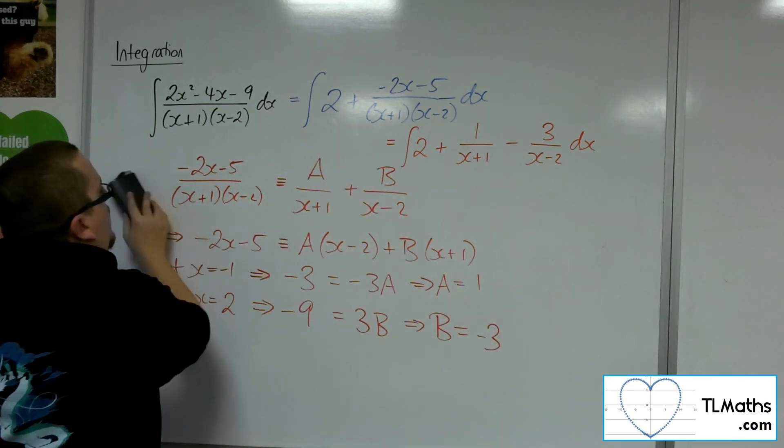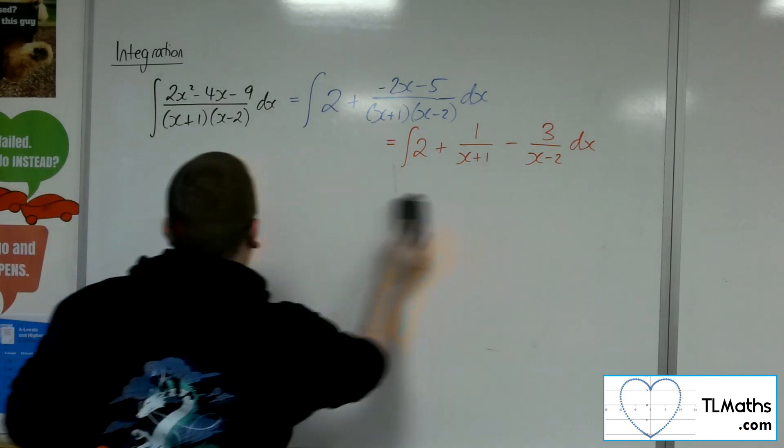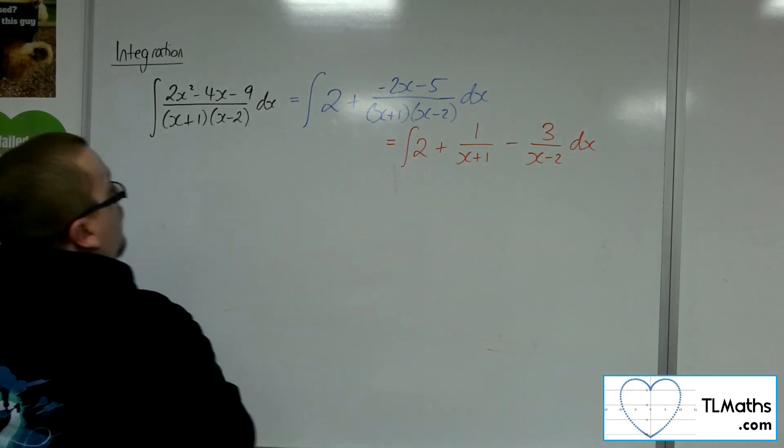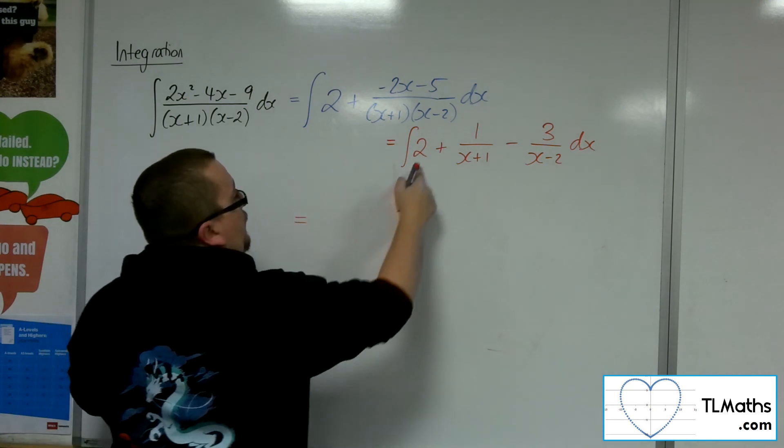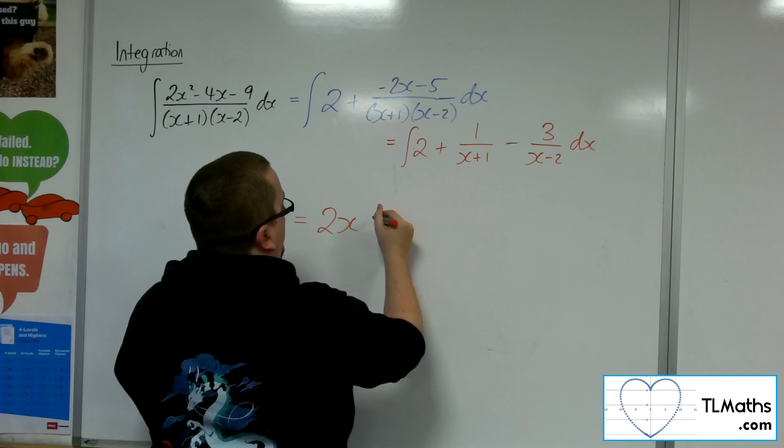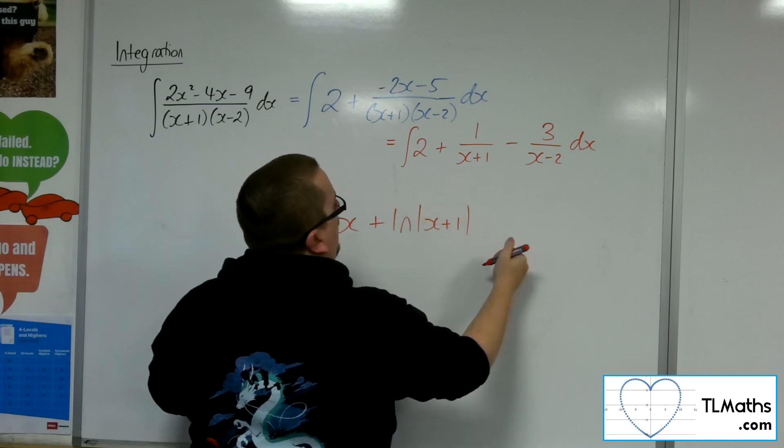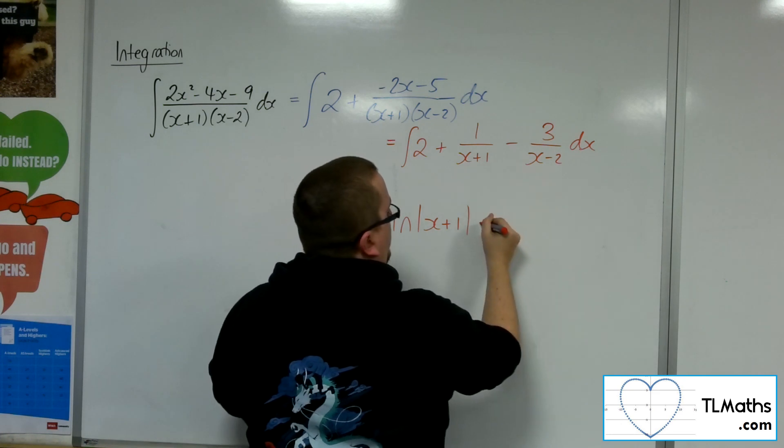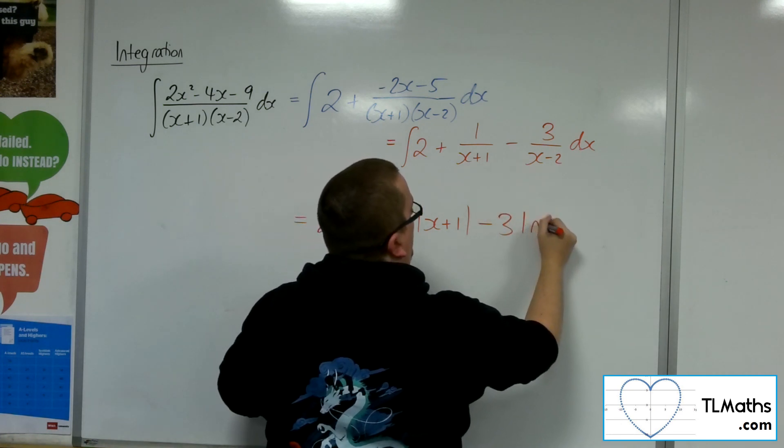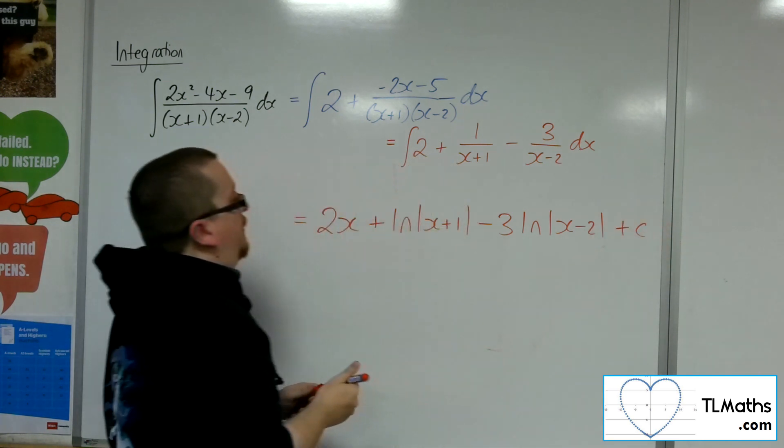We're now in a position where we can integrate. So we've got the 2 integrating to 2x, we've got the 1 over x plus 1, we'll integrate to log of x plus 1. And then we've got the minus 3 over x minus 2, so minus 3 lots of log x minus 2, plus a constant c.